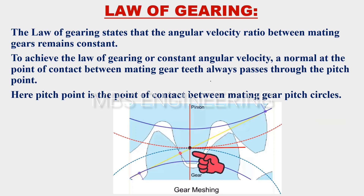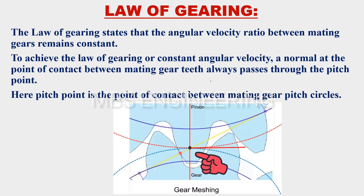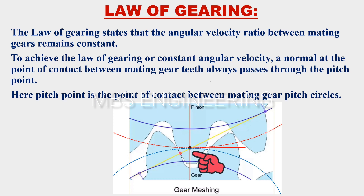Please refer to the picture. To achieve the law of gearing or constant angular velocity, a normal at the point of contact between mating gear teeth always passes through the pitch point.